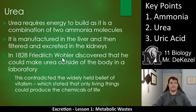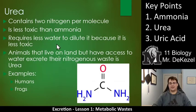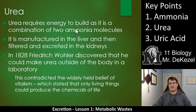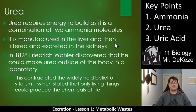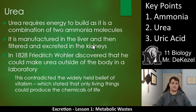We actually have to take the ammonia and turn it into urea, which is a whole other process. Urea requires energy to build as it is a combination of two ammonia molecules — one ammonia molecule and one ammonia molecule with a carbon and an oxygen between them. So it takes energy to get it to that place. We have to build urea in our body so we can excrete it, and it usually happens very fast because we want to get rid of the ammonia. It is manufactured in the liver, then filtered and excreted by the kidneys. That's one reason we say the liver and the kidneys filter your blood.